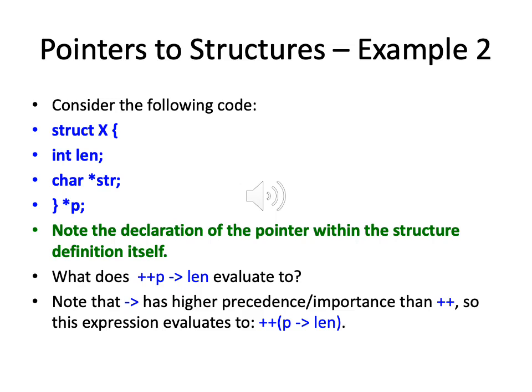Here we have one more example of a pointer to a structure, a bit more elaborate than the previous one. We define a structure struct x with exactly two member variables: length, which is an integer, and *str, which is a character pointer. Within the definition itself we also declare a pointer to this structure. So we have a structure named x with an int member and a char pointer member, plus a pointer variable that will hopefully point to a structure variable of type x.